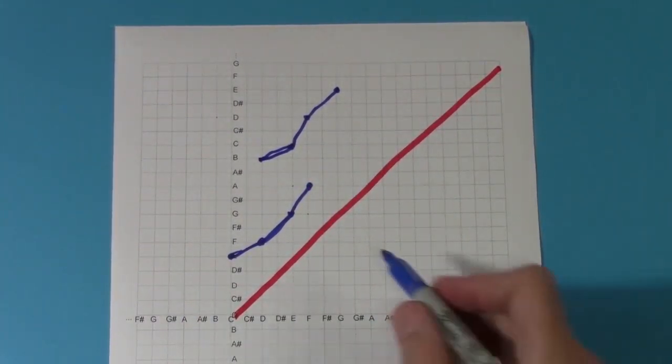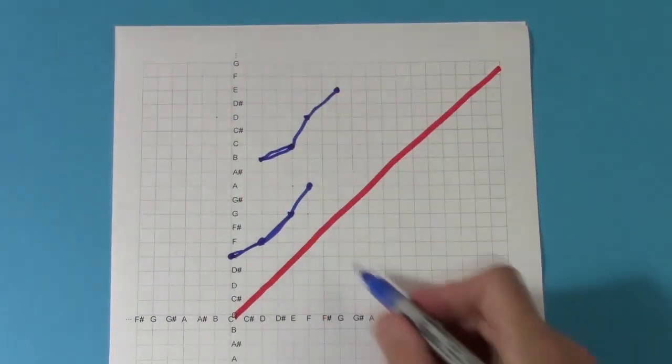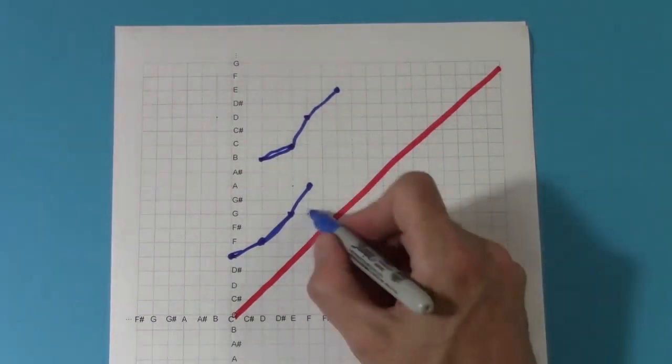Or if the voices move in contrary motion, meaning one up and one down, we're moving perpendicularly to the main diagonal.